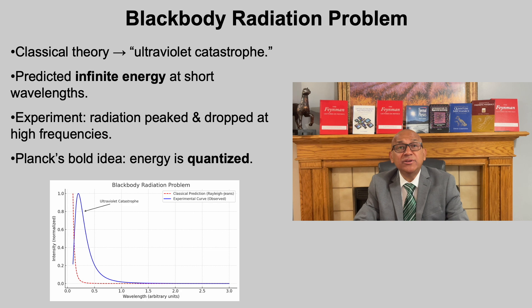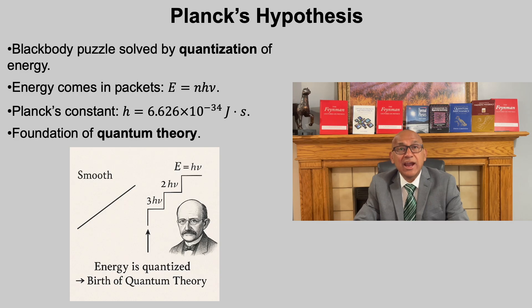One major puzzle was black body radiation. Classical theory predicted infinite energy at short wavelengths, the so-called ultraviolet catastrophe. But experiment showed that radiation peaked and then dropped at high frequencies. It was here that Max Planck made his bold proposal. Energy is quantized. Planck told energy is not continuous but comes in discrete packets or quanta. Energy of each packet is proportional to frequency with Planck's constant as proportionality factor. This was revolutionary.